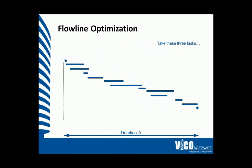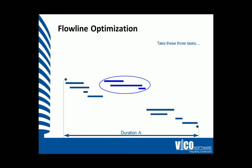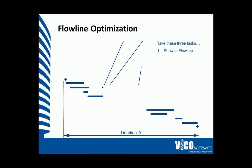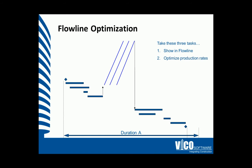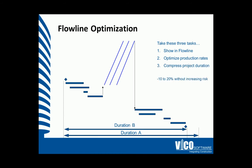Let's start by isolating these three activities and representing them in the float line view. The slope of each line is a representation of its duration. Let's now align the production rates. In this instance, this means making the middle line faster, or matching the slopes of its predecessor and successor tasks. We have now compressed the project's duration by 10-20% without increasing the risk of the entire schedule.